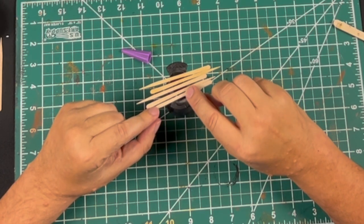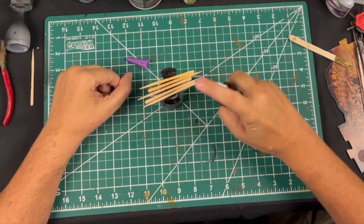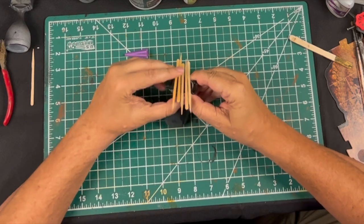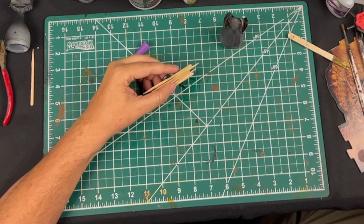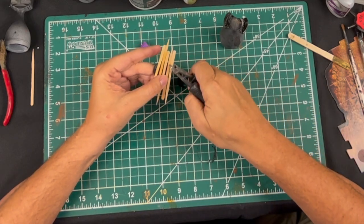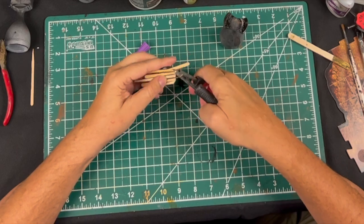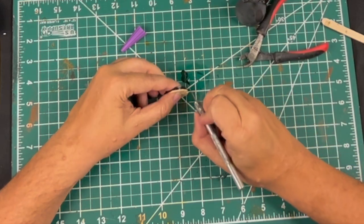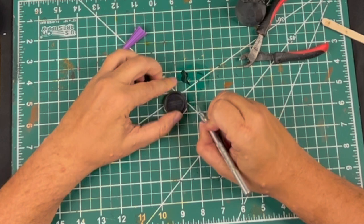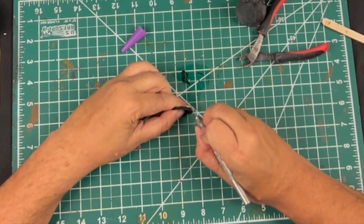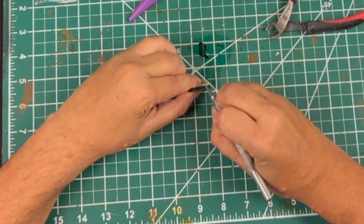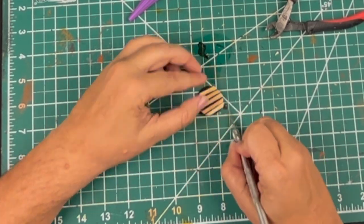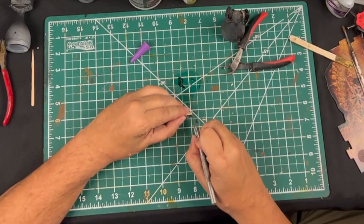A little bit more glue at the end. Then we've got the basic boards down. We're going to use some accelerator to speed up the drying process, then use some clippers. Then we're going to take our X-Acto blade and just shave off the edges.